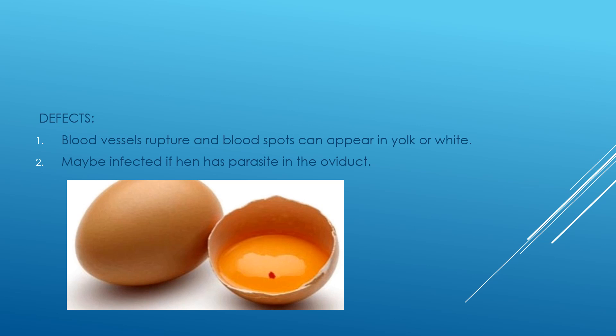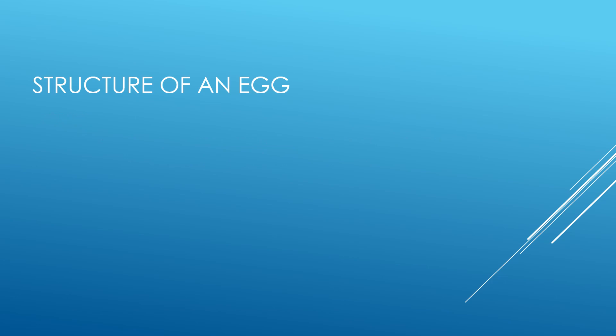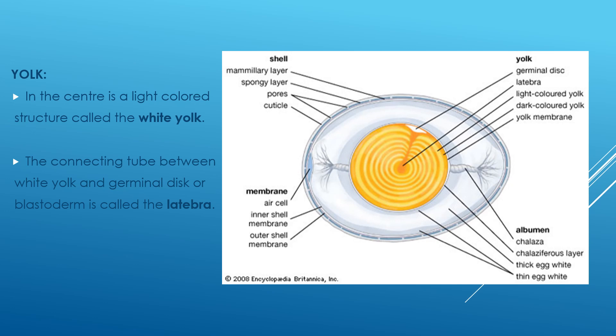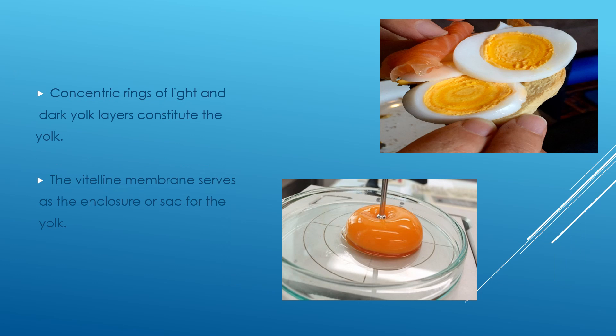Regarding the structure of the egg: a small sphere of light-colored yolk at the center is known as the white yolk. There is a connecting tube between the white yolk and the germinal disc, also called the blastodisc. Concentric rings of light and dark yolk layers constitute the yolk, and the vitelline membrane serves as the enclosure or sac of the yolk. These can be seen clearly in the picture.